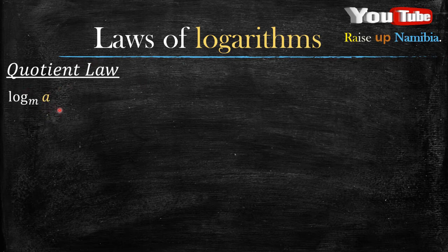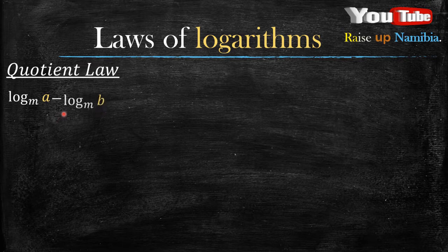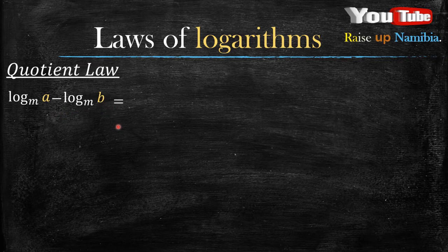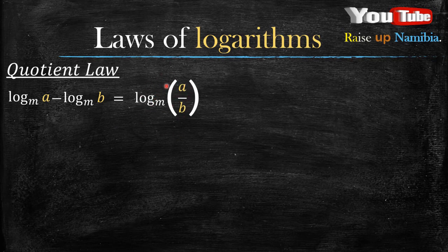So the quotient law: what do you do when you have log base m of a minus, and you want to subtract something from that log? For example, you want to subtract log base m of b.